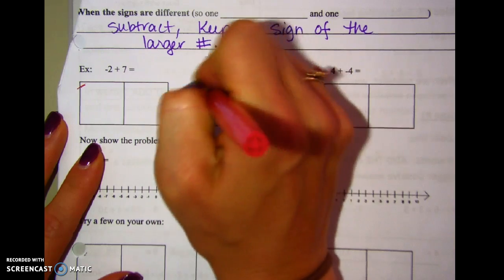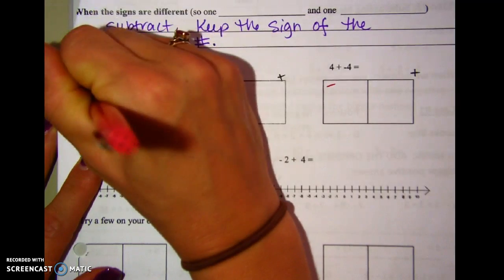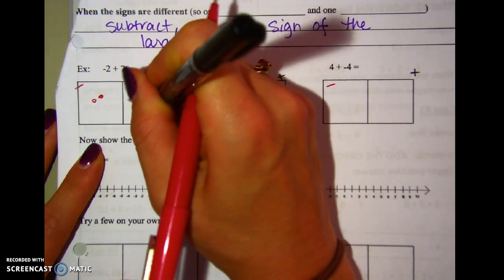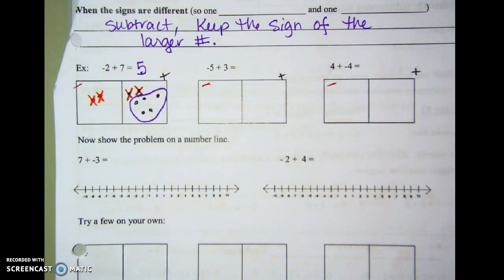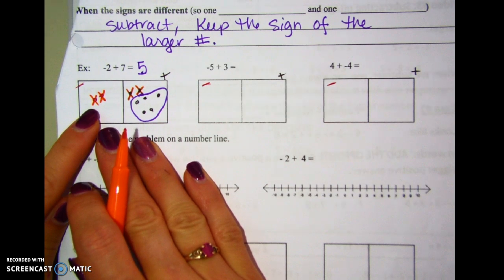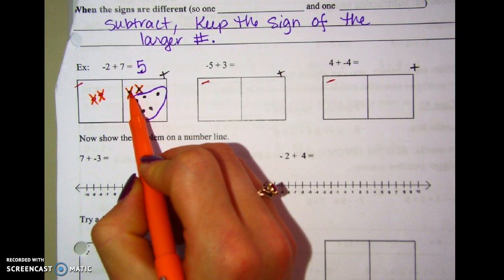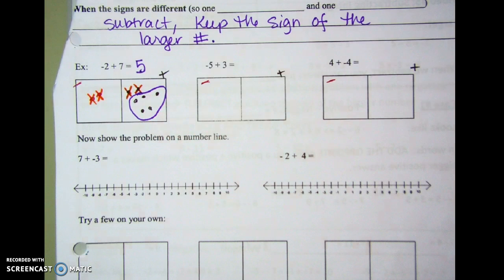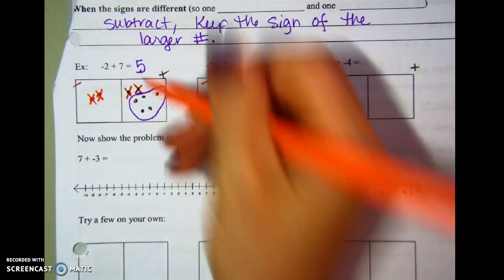This method makes a lot of sense with the chipboard. I have negatives on one side and positives on the other. For negative two plus seven, I set up two negatives and seven positives. We know that a positive and a negative together combine to make zero, so a negative chip and a positive chip drop out. We find all the pairs that cancel out and see what's left — I'm left with five positives. That's my answer.